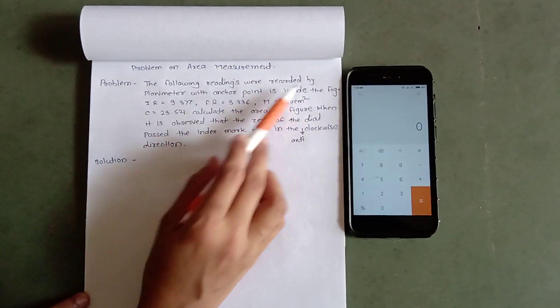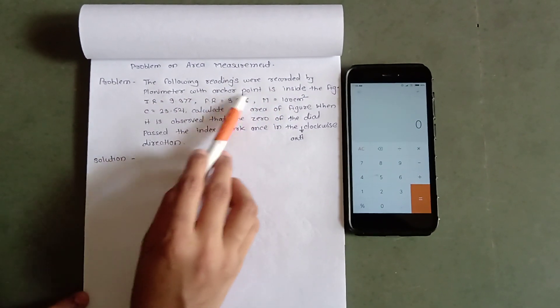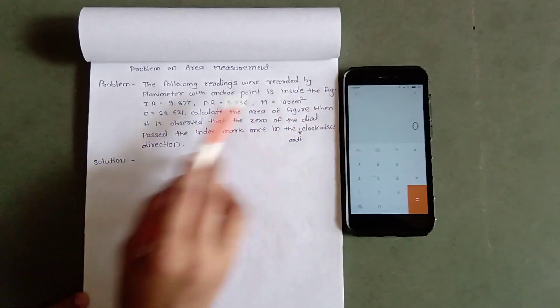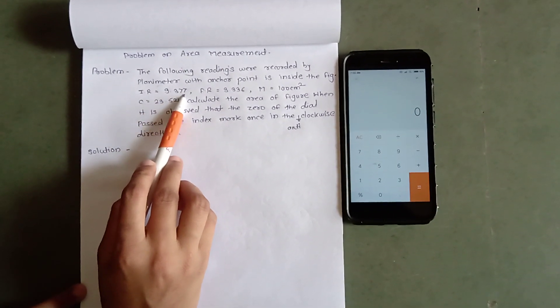The following readings were recorded by the planimeter with anchor point inside the figure. Initial reading was taken 9.377.